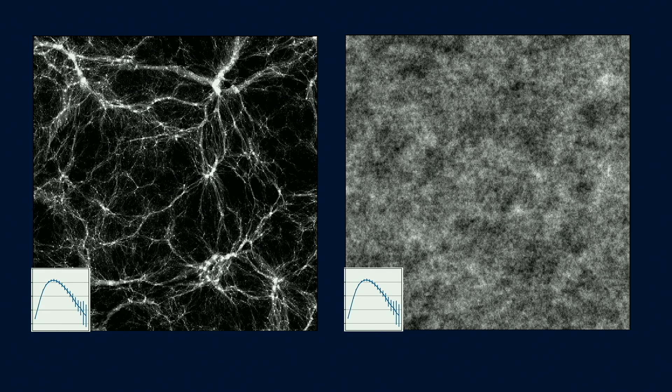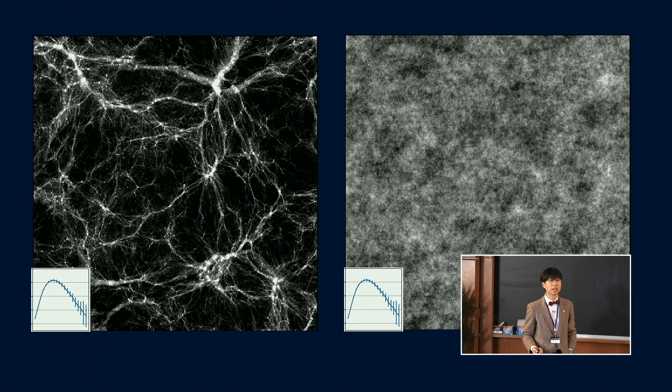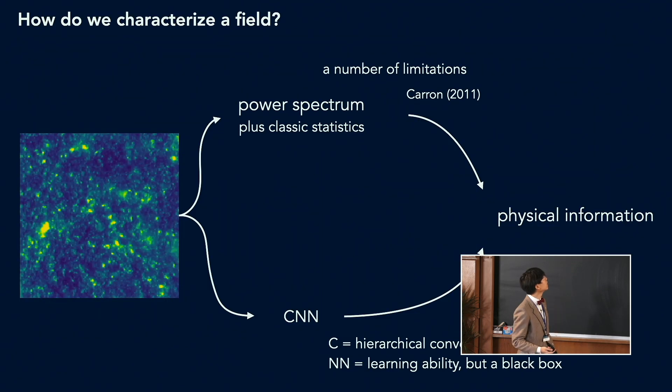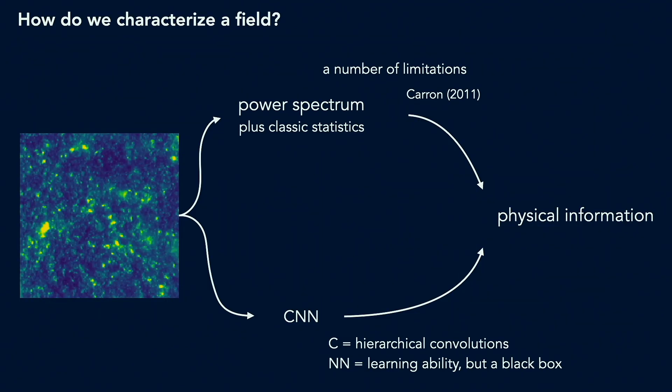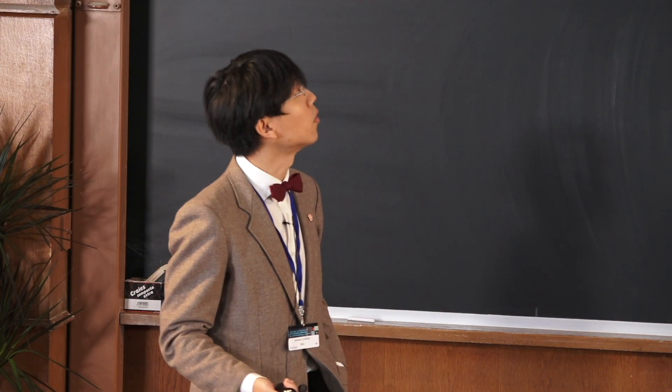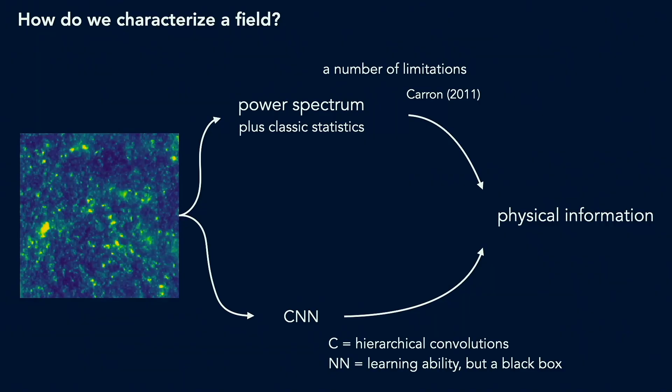So then the first vocabulary coming to mind to characterize the field might be the power spectrum. But as we all know, the power spectrum only extracts the Gaussian information and fails to distinguish these two fields. So then there might be a natural extension called high order statistics. But although it works perfectly well in the weakly non-Gaussian regime, when we go to highly non-Gaussian regime, it actually has a lot of limitations. Basically you have too many numbers of coefficients and also the information is escaping from the sequence. So there's a wonderful paper discussing the incompleteness of high order statistics in cosmology.